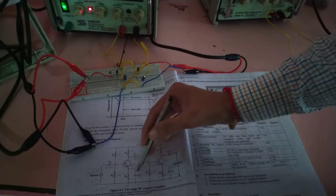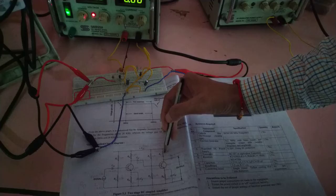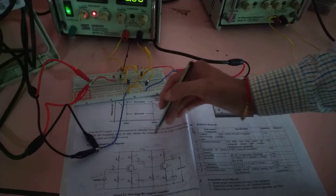CE is the bypass capacitor. Then RC, this RC is acting as the load for the second stage and this RC for the first stage.